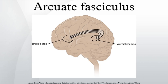The arcuate fasciculus is a bundle of axons that forms part of the superior longitudinal fasciculus. It bi-directionally connects caudal temporal cortex and inferior parietal cortex to locations in the frontal lobe. This bundle of axons is either not present or substantially smaller in non-human primates. Although the regions to which the arcuate fasciculus connects are still subject to debate, its connectivity has been shown to correspond to various functional areas within the temporal, parietal, and frontal lobes.